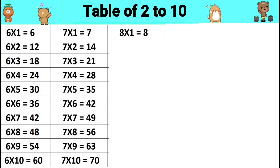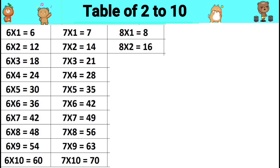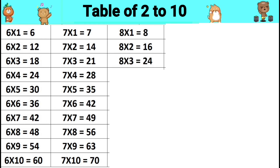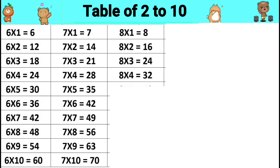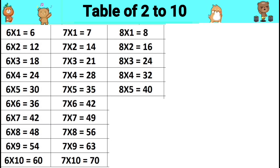Table of eight. Eight ones are eight. Eight twos are sixteen. Eight threes are twenty-four. Eight fours are thirty-two. Eight fives are forty.